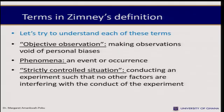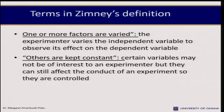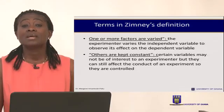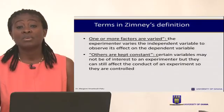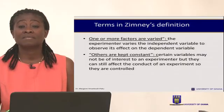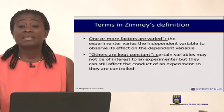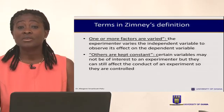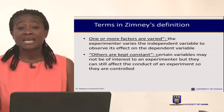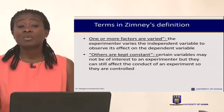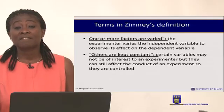A strictly controlled situation means we conduct the experiment such that no other factor is interfering with it. One or more factors being varied means we have the independent variable, which the researcher varies or manipulates, and then observes how that variation will affect the dependent variable. The other variables kept constant are the extraneous variables — variables that are not of interest to the researcher but can affect the outcome of the study.